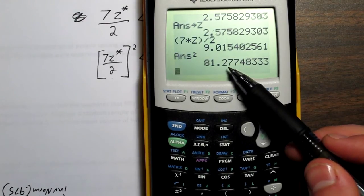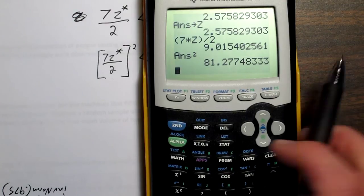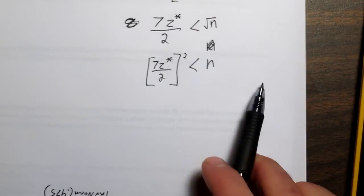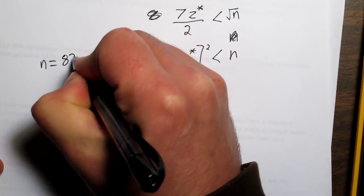Even though we should technically, by rounding rules, round this down to 81, with sample size you always want to round up to ensure you're getting that full 99% confidence. So what size sample would be required? N would need to be 82.